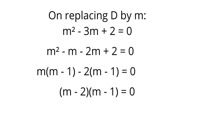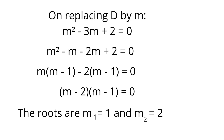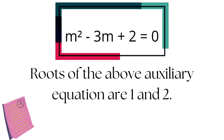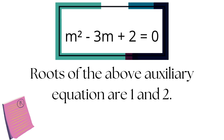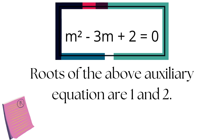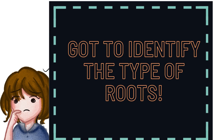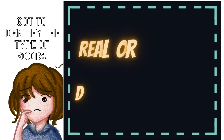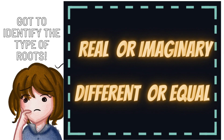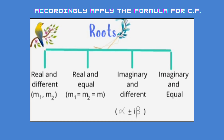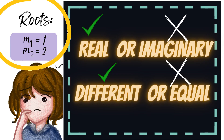Let us name the roots as m1 and m2, where m1 equals 1 and m2 equals 2. These are the roots for the auxiliary equation of the differential equation we are solving. We can clearly identify the type of roots: we need to check whether the roots are real or imaginary, and whether they are equal or different from each other. Here, m1 equals 1 and m2 equals 2 — both are real and different from each other.